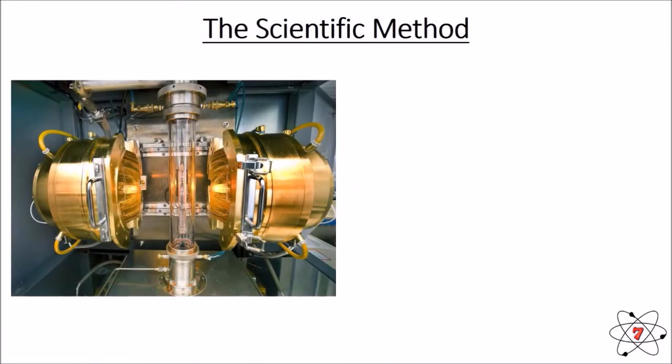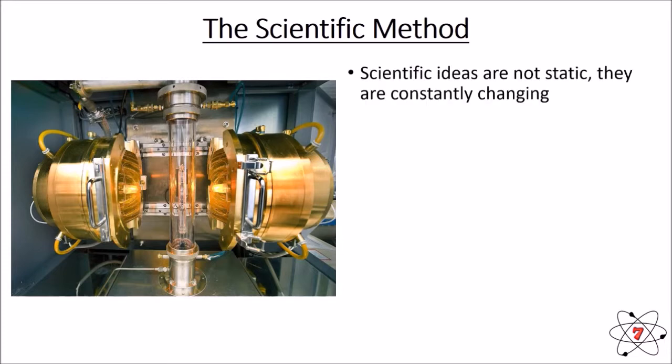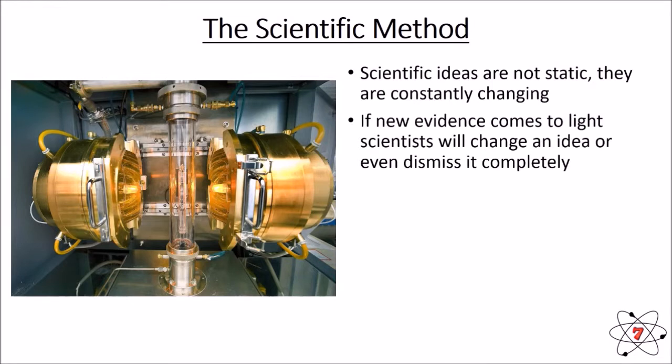So a key thing with the scientific method is that scientific ideas are not static. They change constantly. Within five years of an idea being developed, a new theory being developed, those ideas will be tweaked, they'll be refined, they'll be improved. Now if new evidence comes to light, something brand new is being discovered that may contradict what we already know, a scientist might decide, no, my original idea is wrong, I'm going to change it. Or maybe no, my original idea was just actually completely wrong. There's nothing correct about it. Let's forget about it. Scientists are not precious about their ideas. If something is proved to be wrong, it will be accepted. Now if we go back and think about pseudoscience, if evidence proves that pseudoscience is wrong, the pseudoscientist will ignore it. This is a fundamental difference between the two.